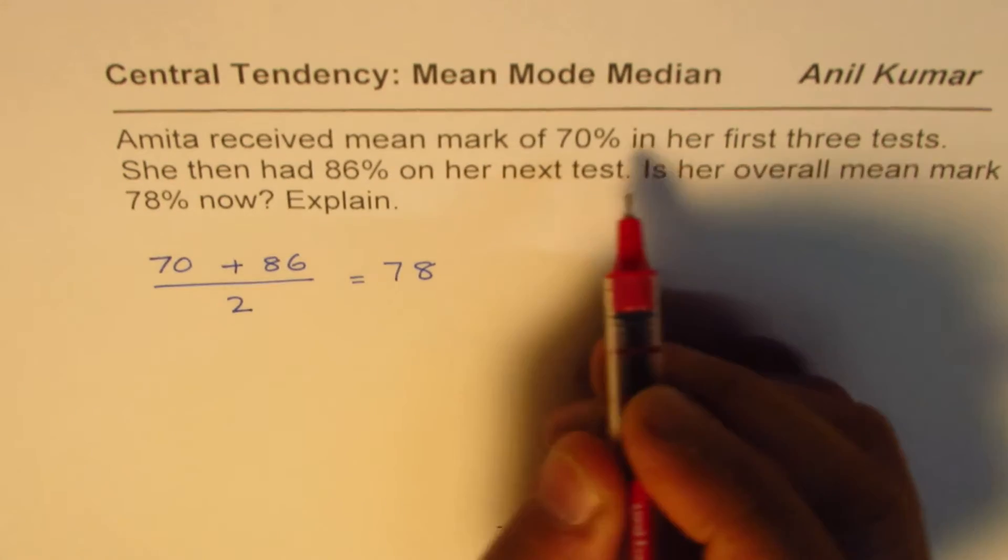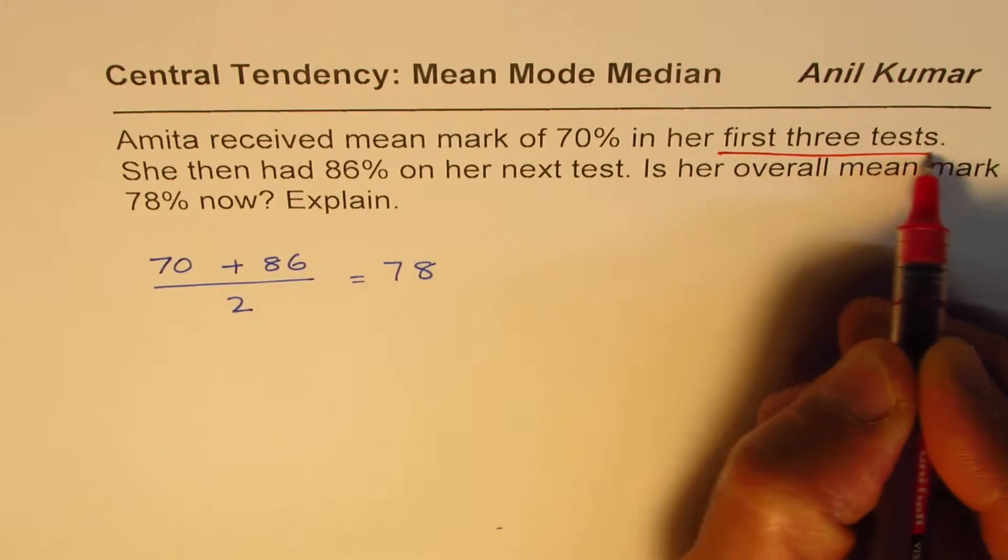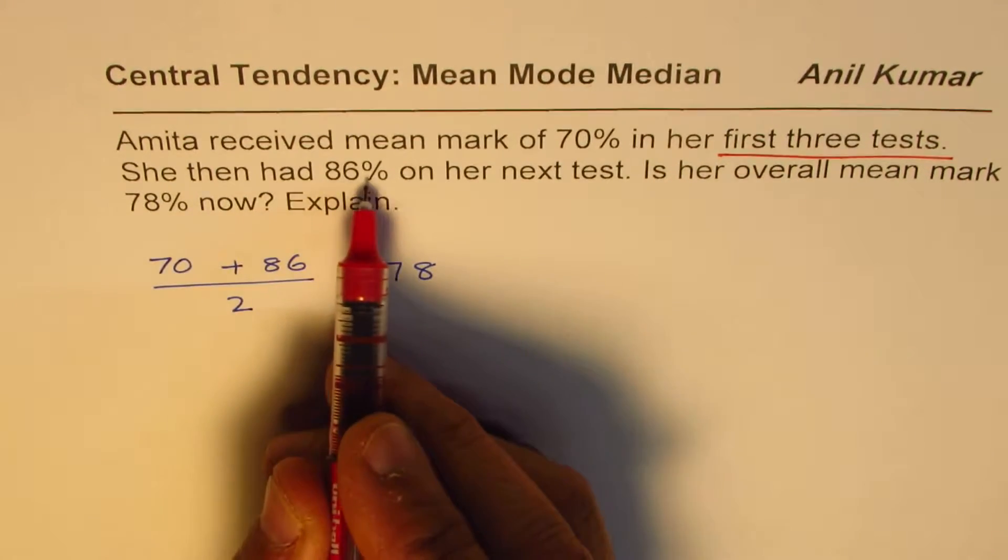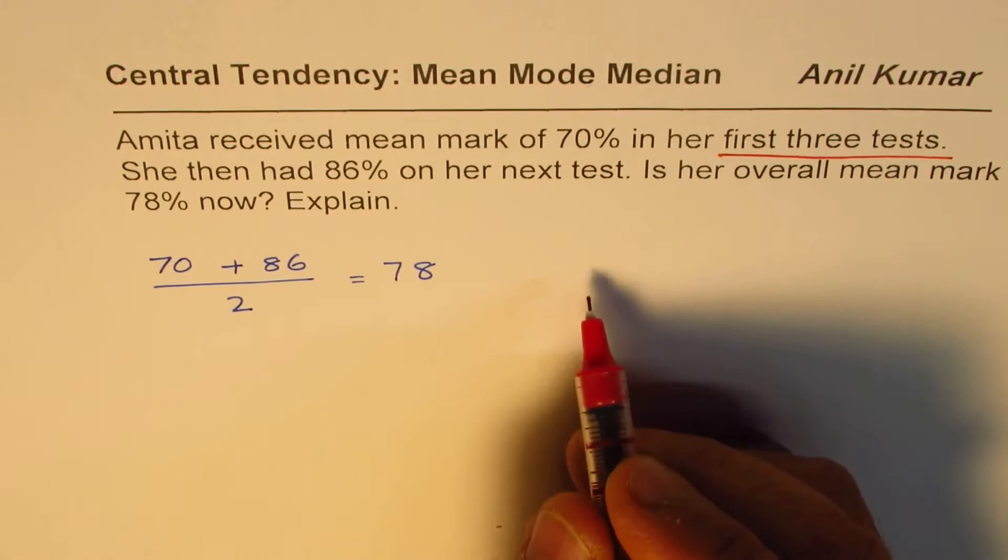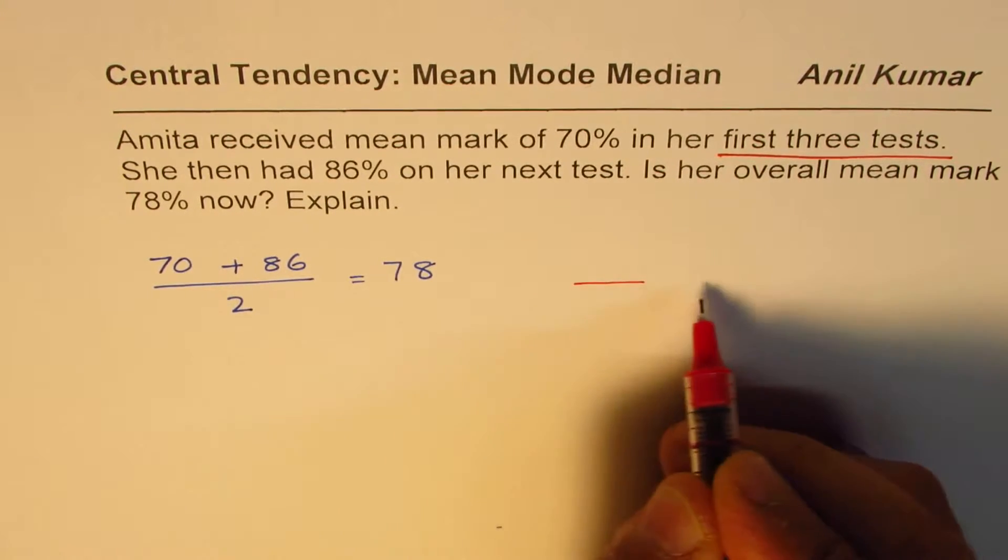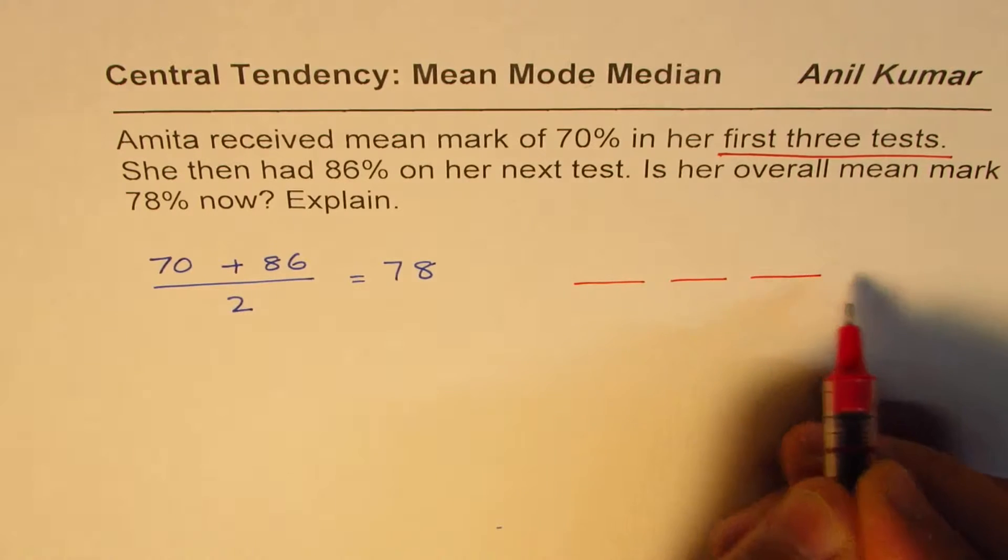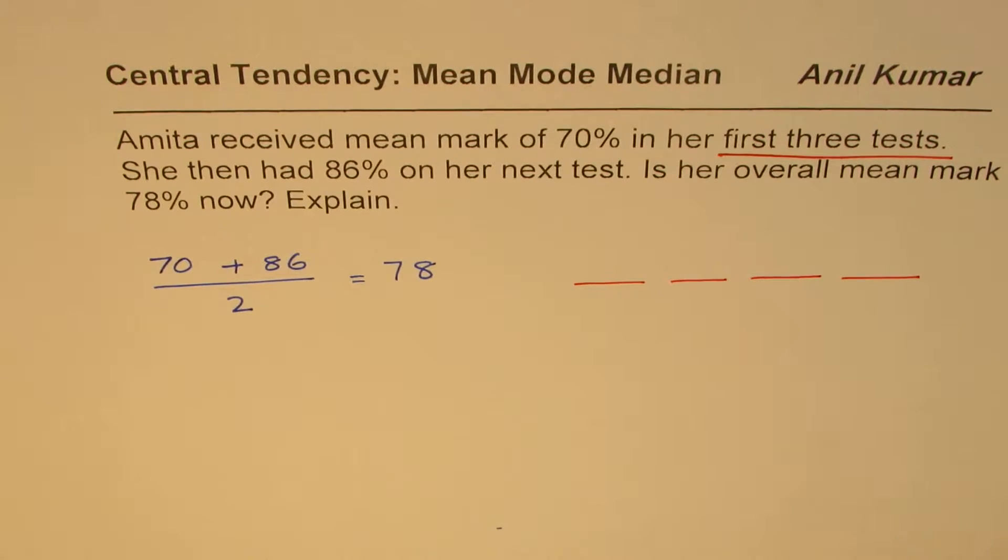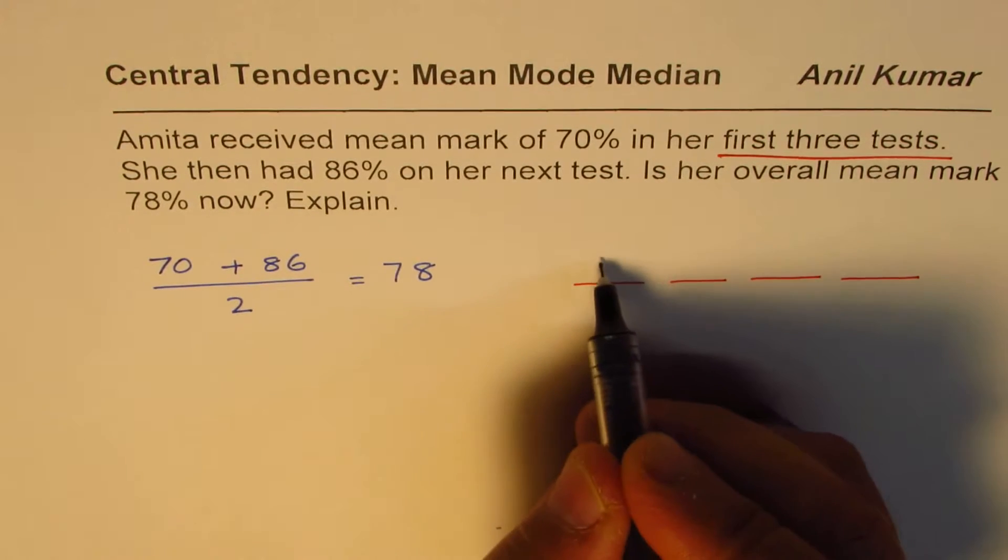It is mean mark of her three tests, and then she scored 86% on the fourth. So basically the situation is there are three tests and then the fourth. So let's say mean is 70.